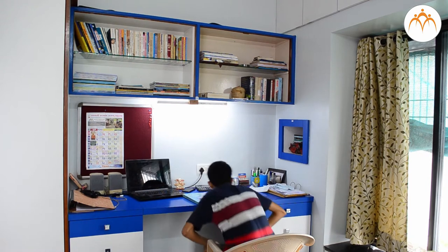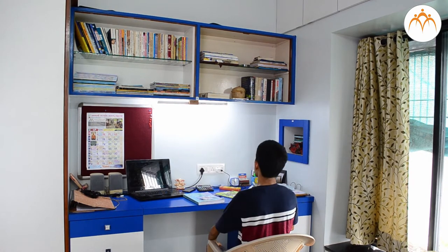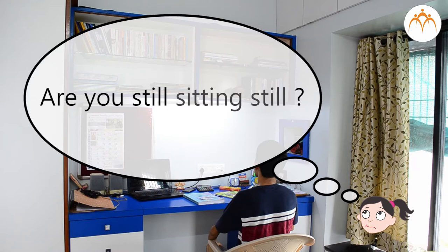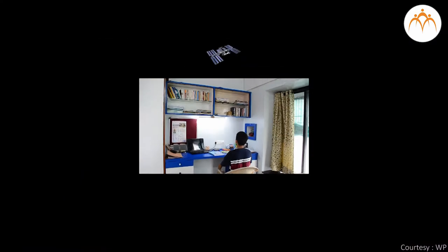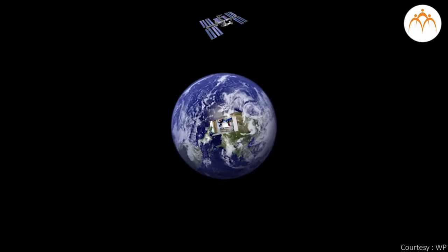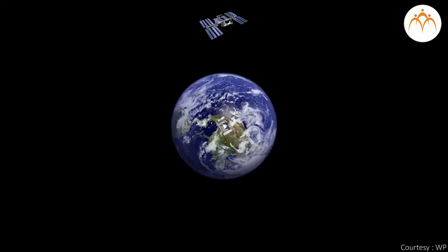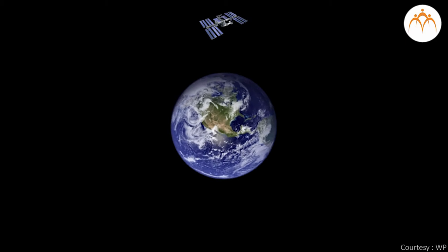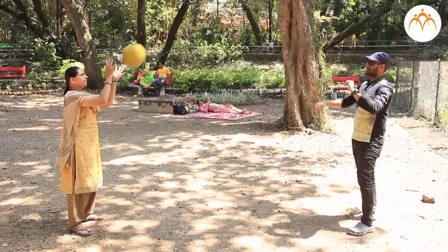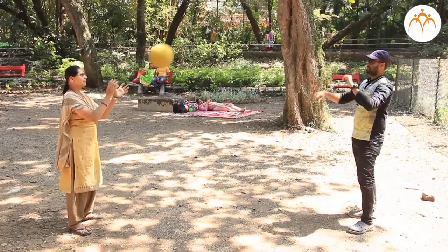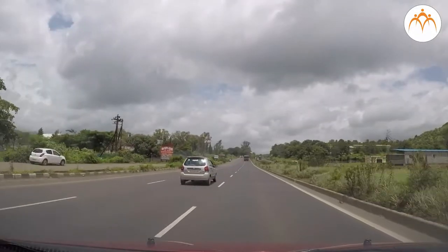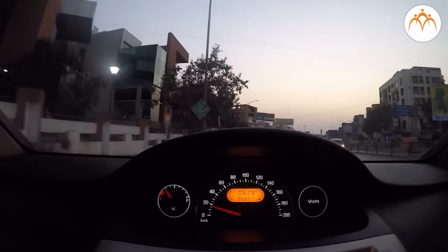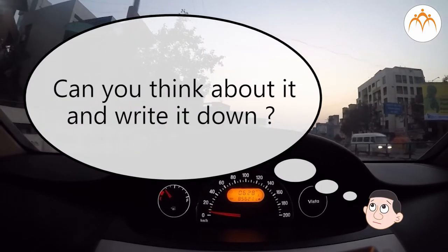Now, you are at home sitting in a chair. Home is not moving — are you still sitting still? An astronaut looking at you from space finds that you are moving very fast. You are spinning around along with Earth. There is a lot of motion that involves throwing a ball or driving a car. The world will be a very different place without motion. Can you think about it and write it down?